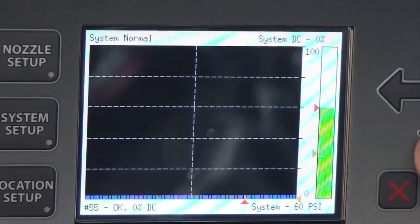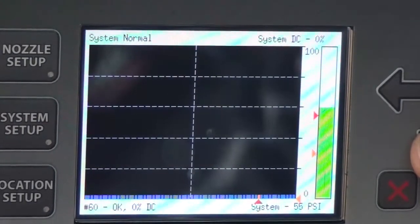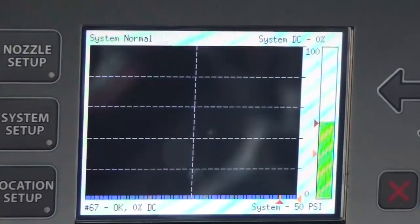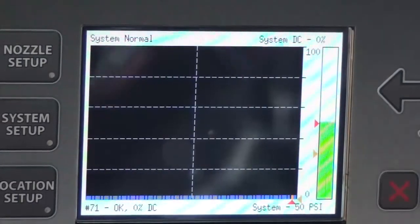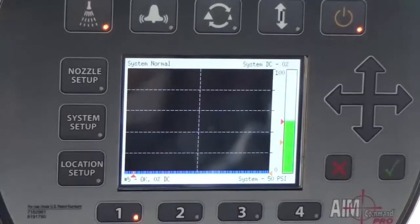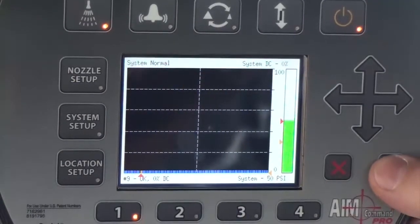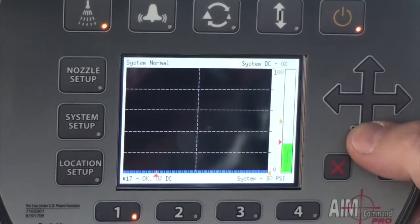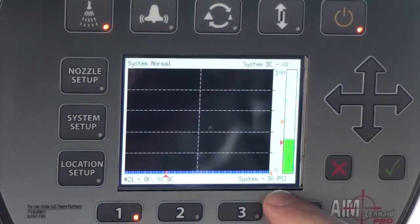AIM Command Pro has the same features as AIM Command, one of which is the ability to change pressures on the go and to have two preset pressures that you can toggle between. This is extremely useful in the field because as chemicals get increasingly more harsh, drift becomes more of a factor. One of the simplest ways to reduce drift is to reduce pressure.